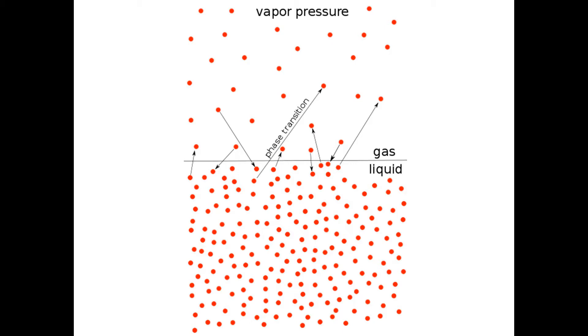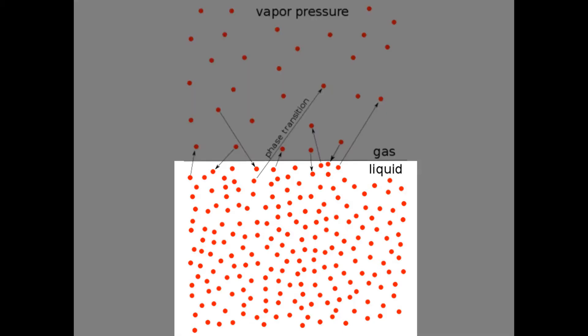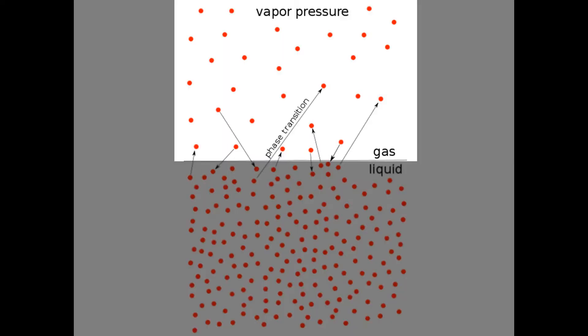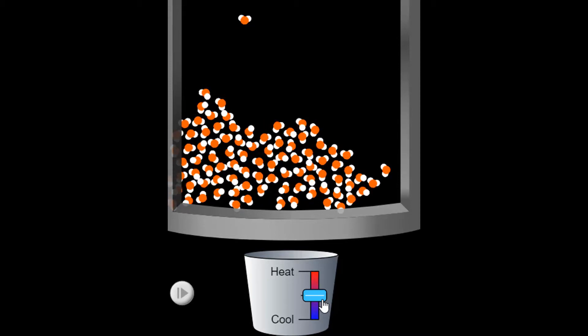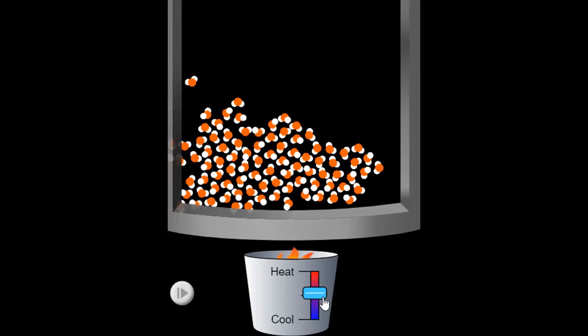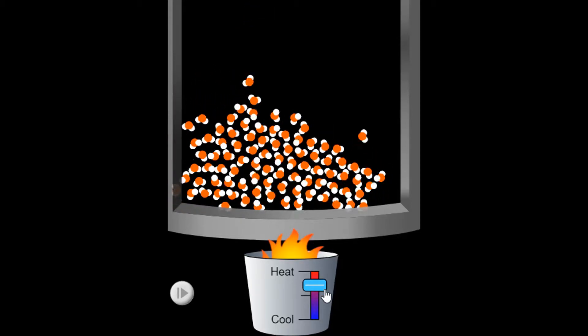During evaporation, the intermolecular forces between particles in the liquid phase are broken, changing the particles into the gaseous phase. Only particles with sufficient kinetic energy are able to move quickly enough to break the intermolecular forces which hold them to other molecules.